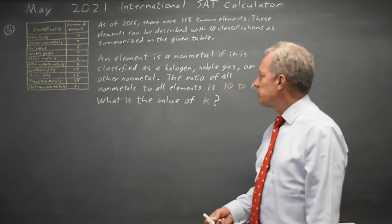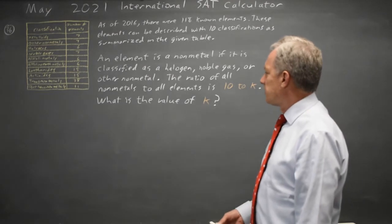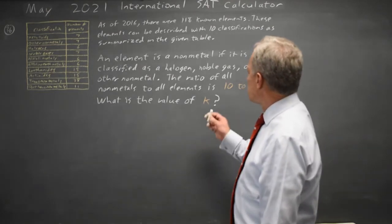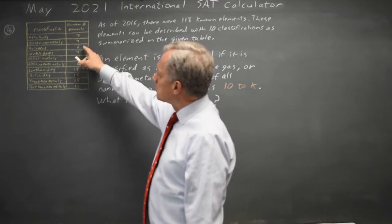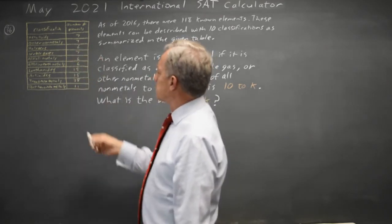The College Board is asking for a ratio of all nonmetals to all elements. All nonmetals is halogen, noble gas, and other nonmetal, which is 6 plus 7 plus 7 is 20.